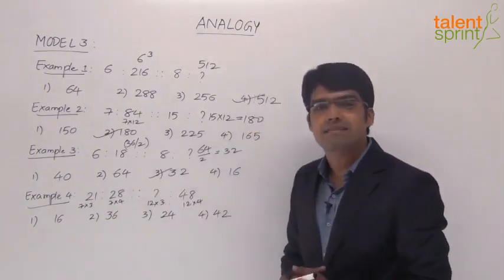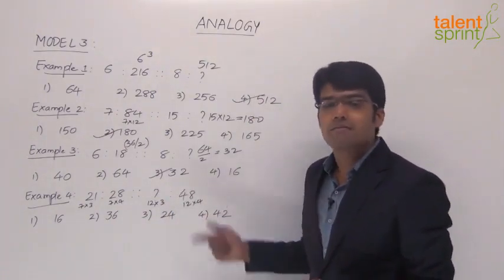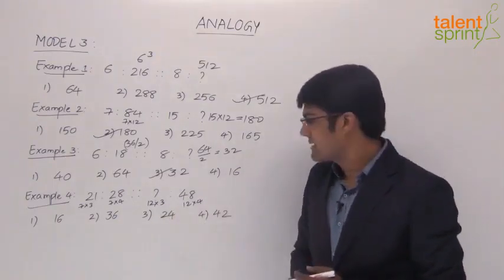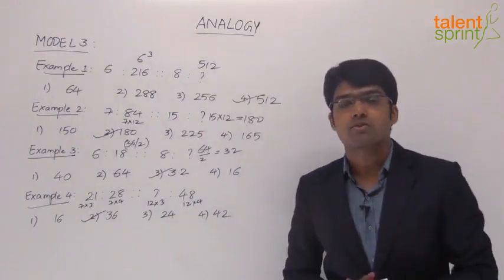If 12 into 3, 36 is the answer. So if that is given in answer options we have got the answer. Otherwise we may have to work for something else. Now 12 into 3 is 36 and 36 here is option 2. So we can now go for option 2 as the right answer.